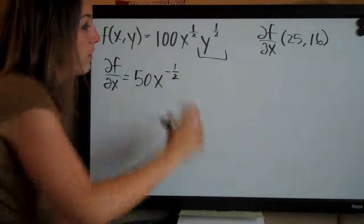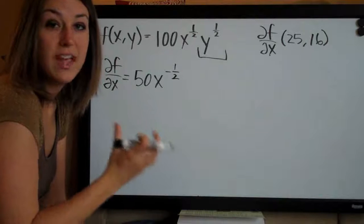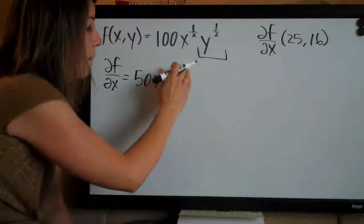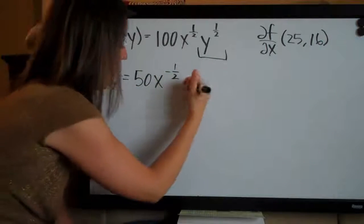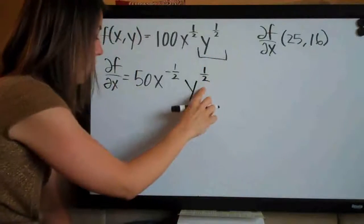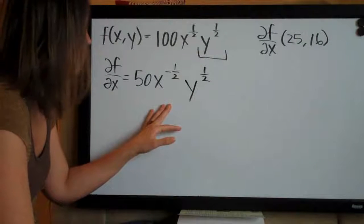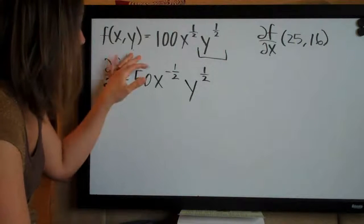And then the y to the one-half, remember, was just going to be part of the coefficient. It was going to stay completely intact and we weren't going to mess with it at all. So we can just go ahead and leave it here on the end. So this is the full partial derivative of the function with respect to x.